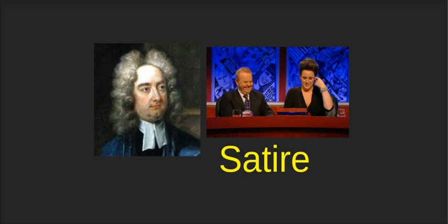Rather than just writing an angry piece saying 'the way people are treated in this society is bad,' he wrote this kind of mocking, satirical piece. In Pride and Prejudice, Austen uses humor to attack the areas of injustice in the society in which she lived.